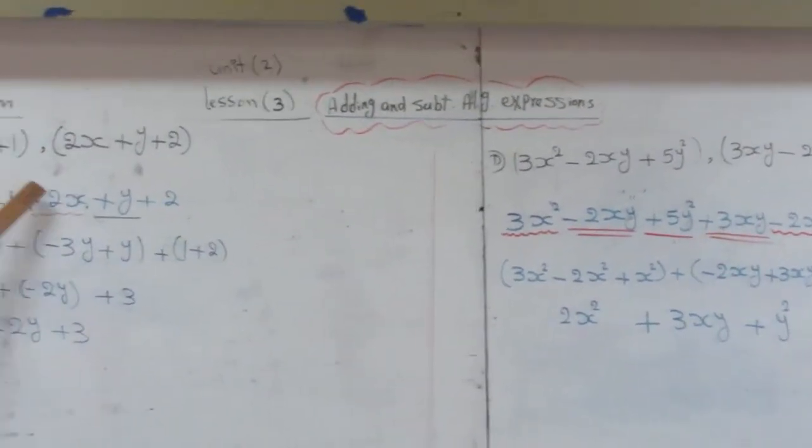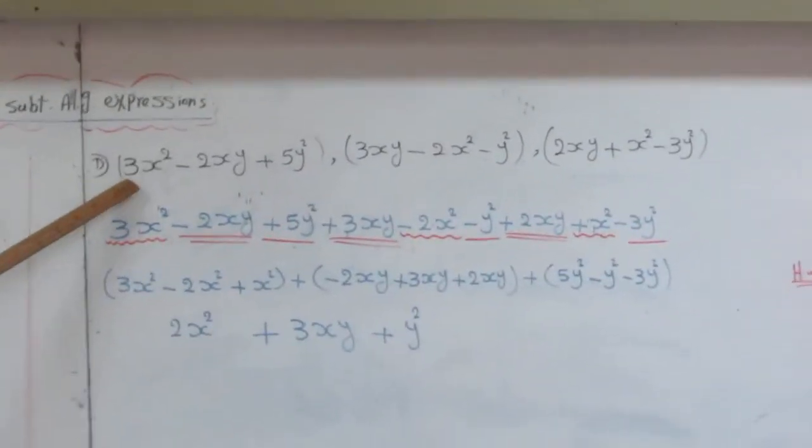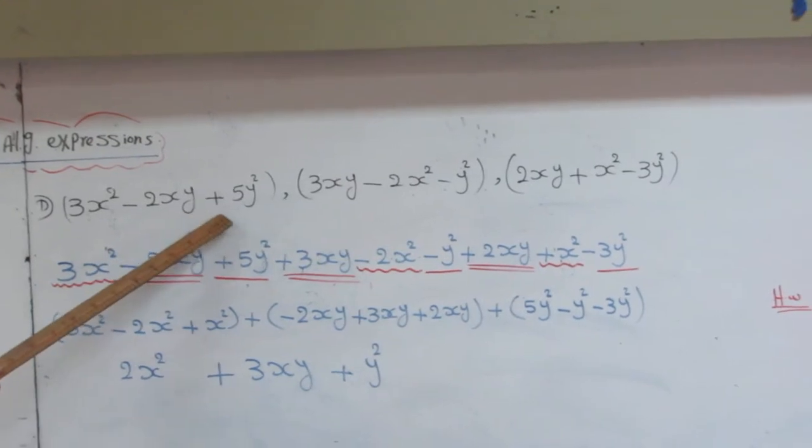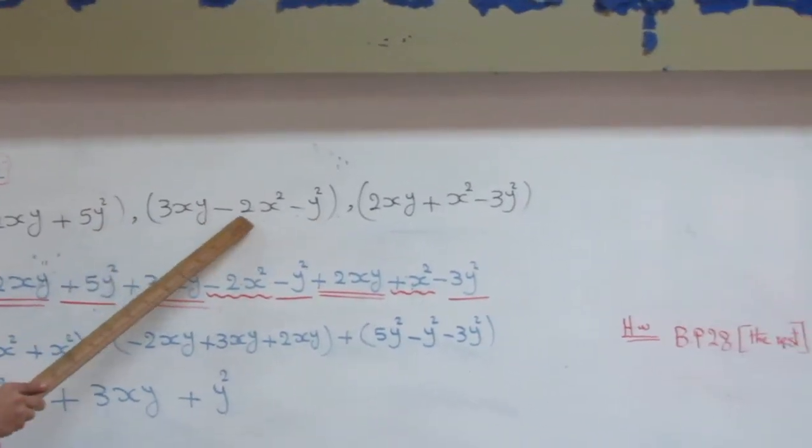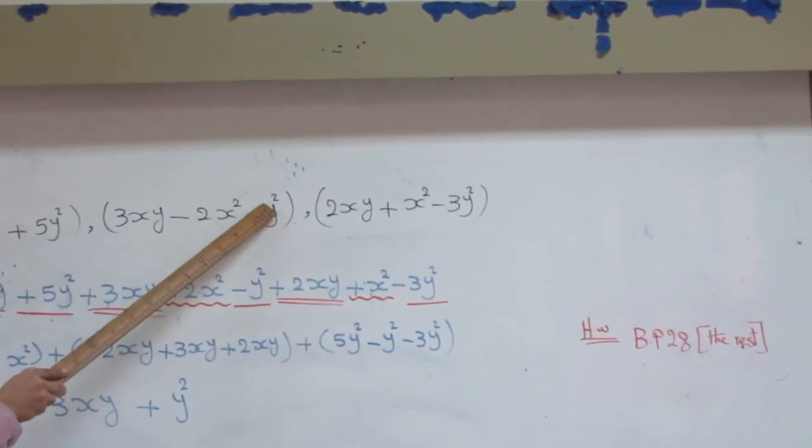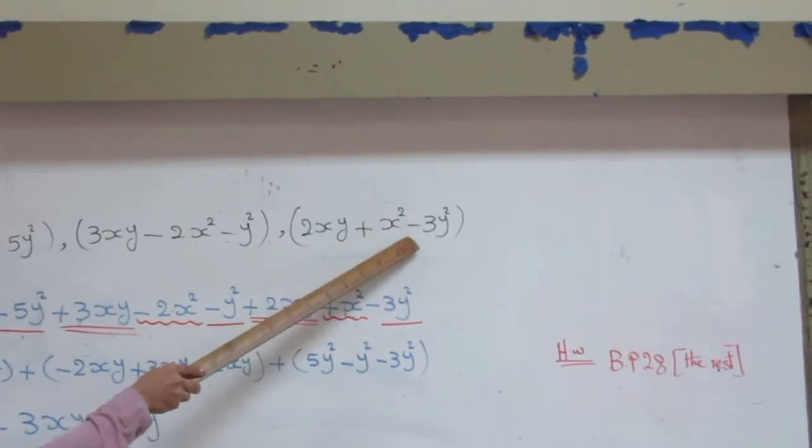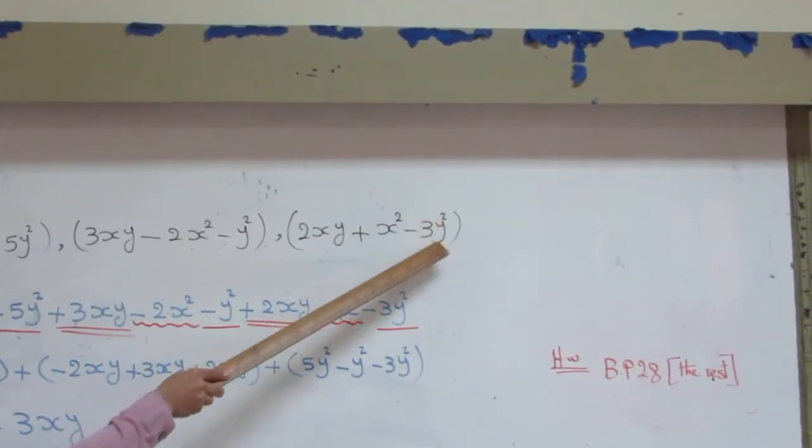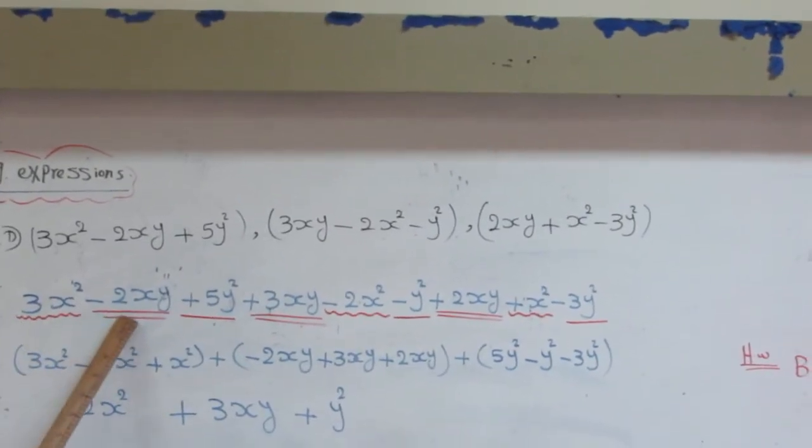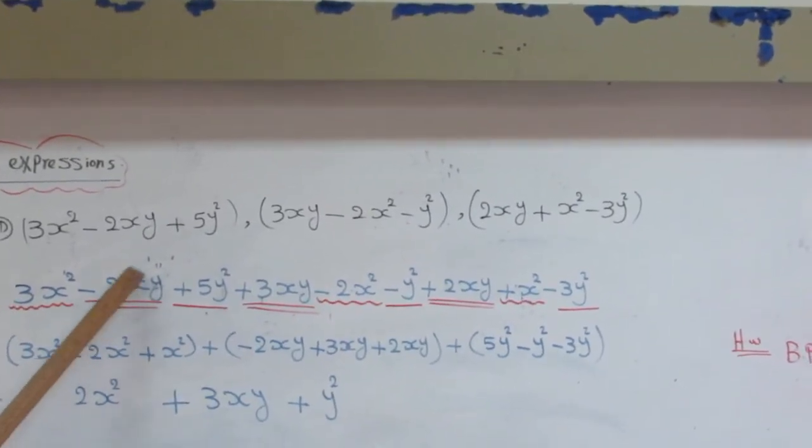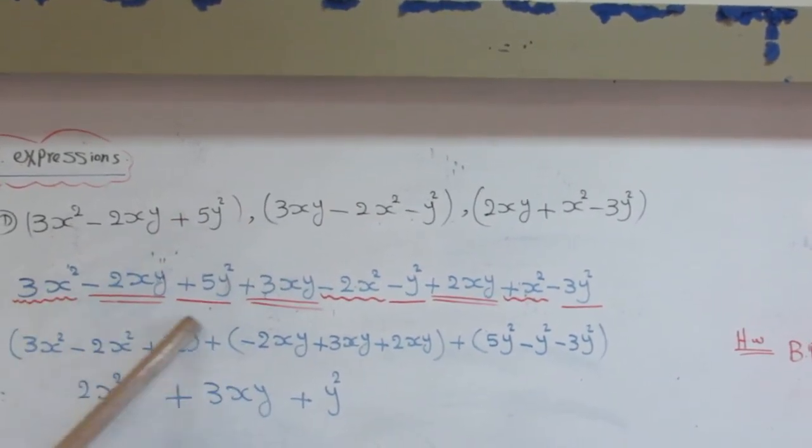The second example in booklet page 28, letter B. I have here three expressions. 3X² minus 2XY plus 5Y². 3XY minus 2X² minus 2Y². 2XY plus X² minus 3Y². I want to get the sum. Then I will expand the three expressions together and take the brackets away and the comma, put plus, like this way.